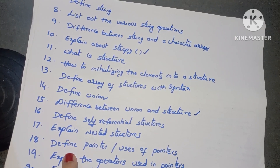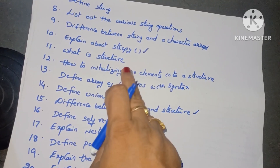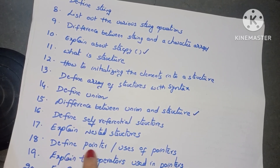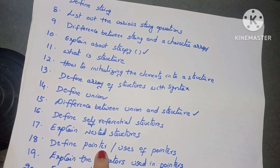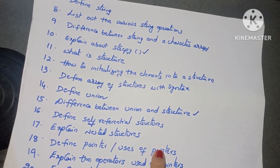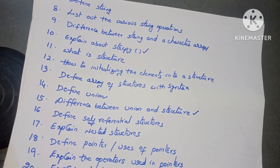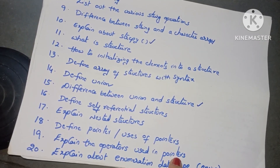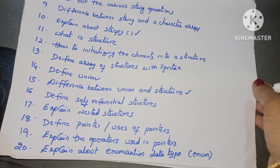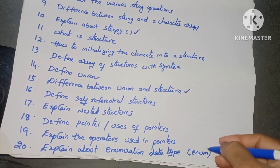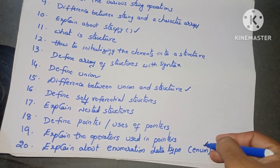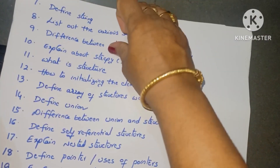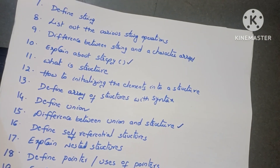Define pointers — up to now all those questions were from structures. Now on to pointers: define pointers and explain the use of pointers, the need for pointers. Next: explain the operators used in pointers. Next: explain about the enumeration data type — a very very important question and also an SI type question.